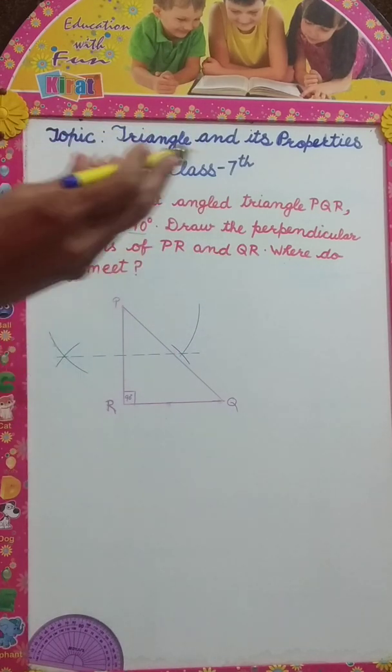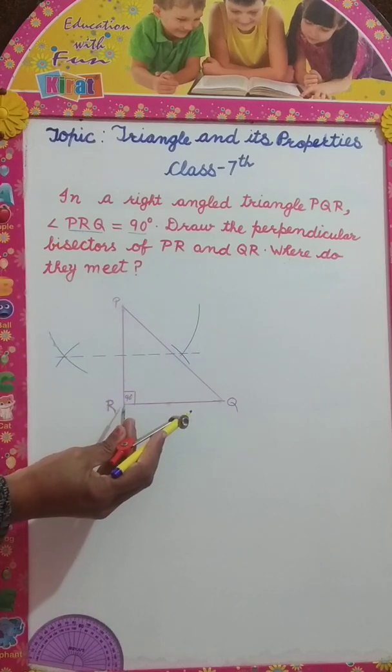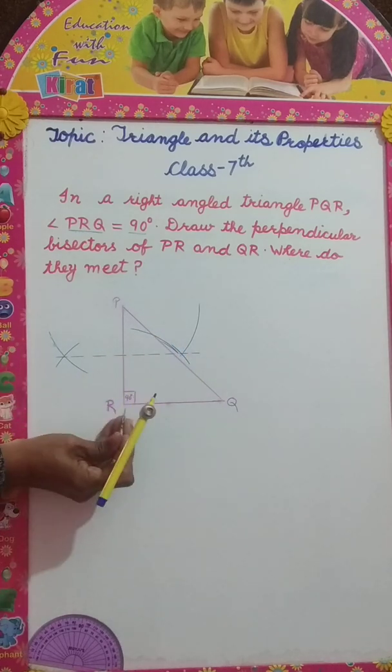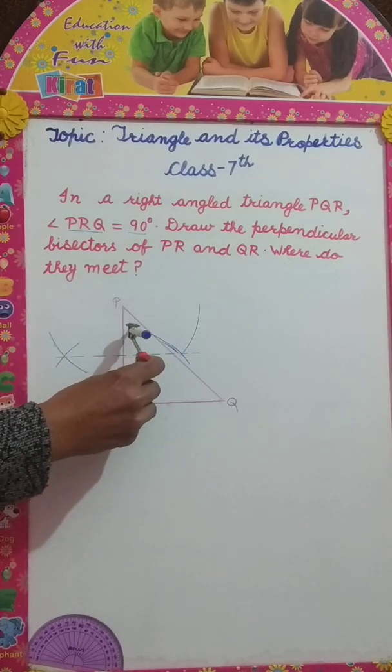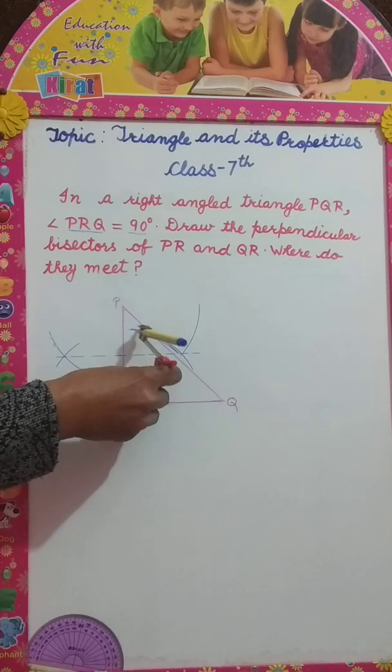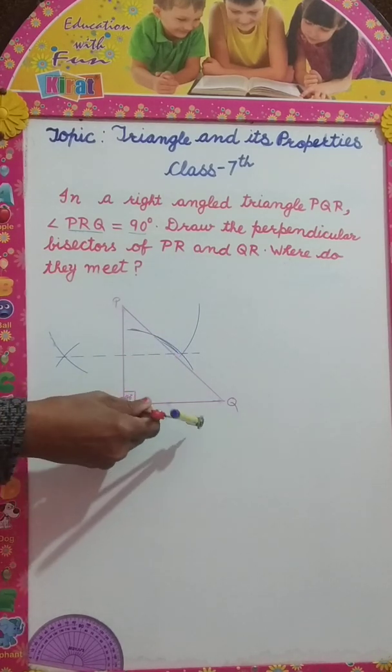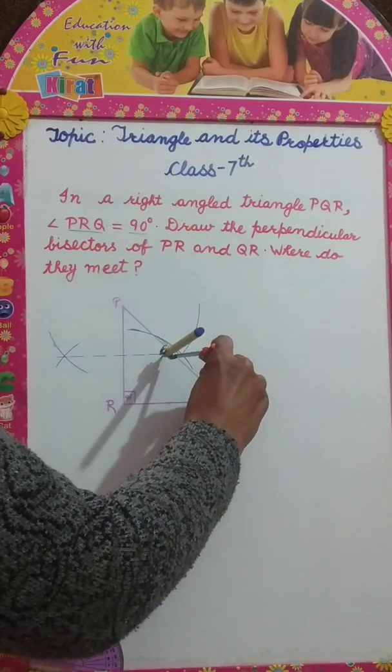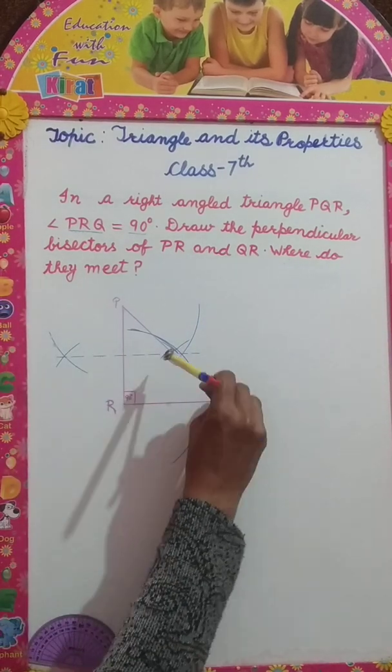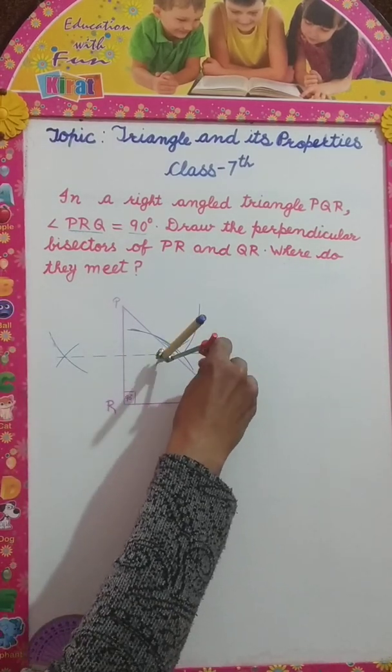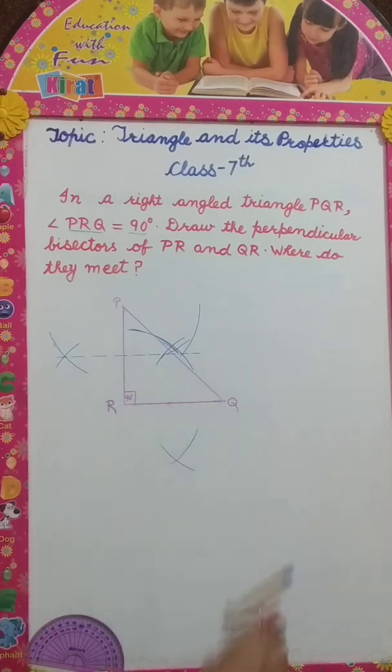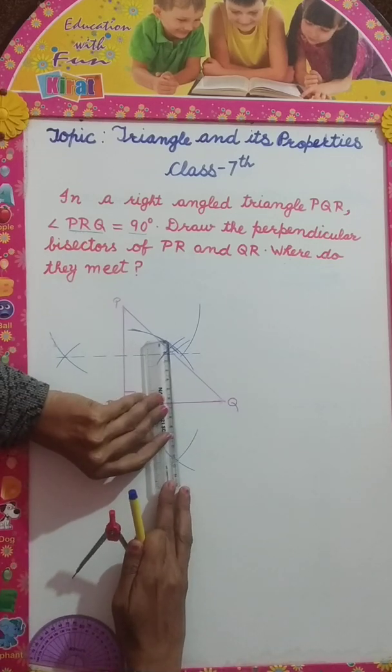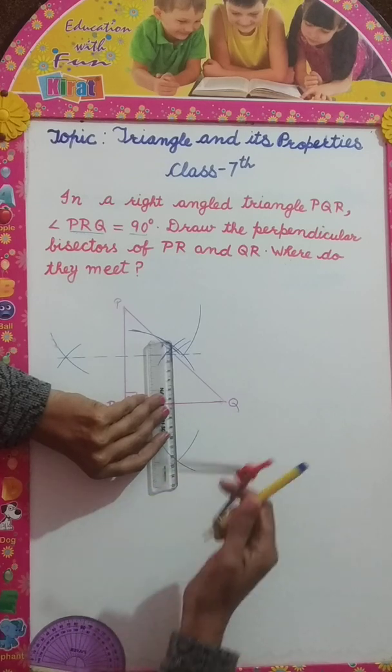Now I have to draw perpendicular bisector of QR. I will open my compass more than half of QR. Taking R as a center, draw an arc, and from this side also. Now, taking Q as a center, draw another arc. Now, join these intersecting points with dotted lines.